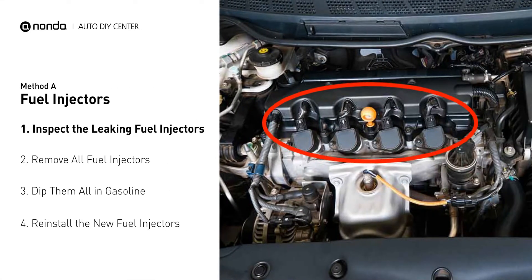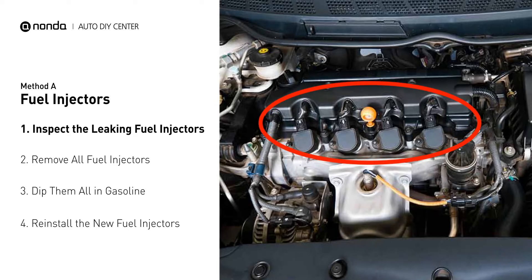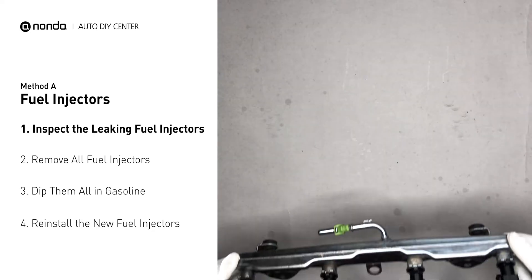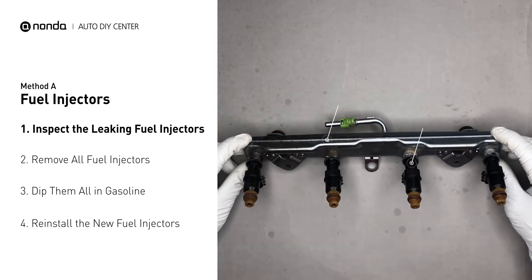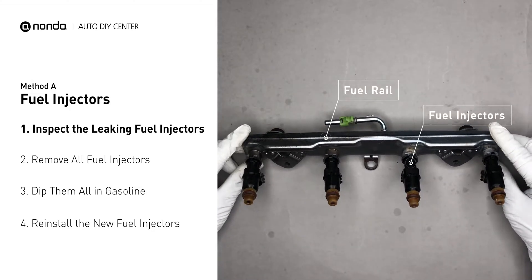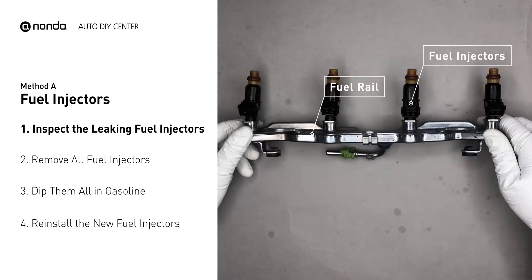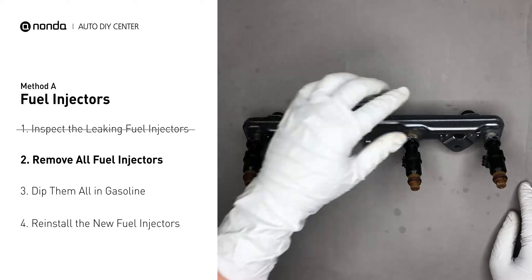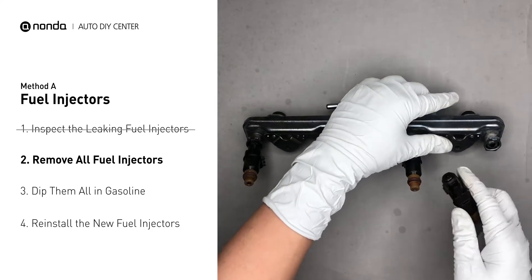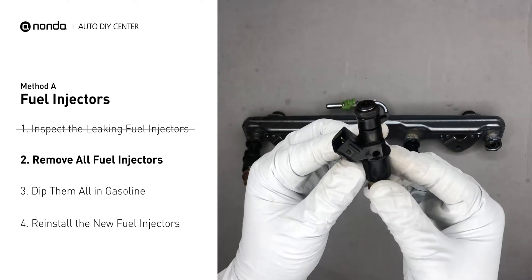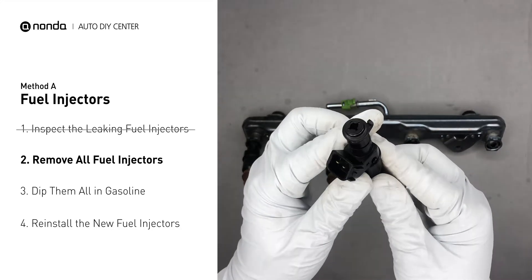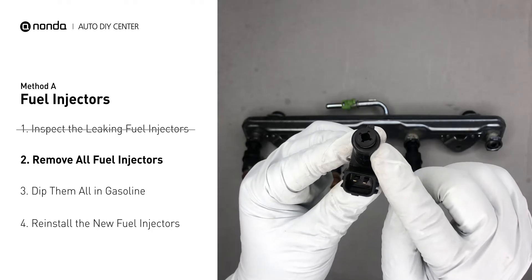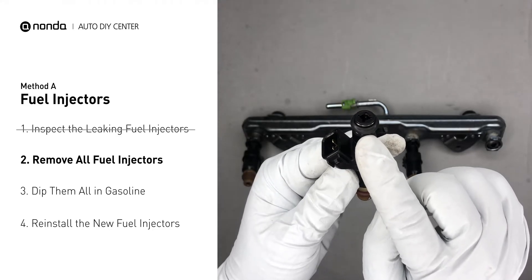The fuel injectors are mounted in the intake manifold so that they spray fuel directly at the intake valves. Inspect the leaking fuel injectors on the fuel rail. Carefully remove the fuel injector, making sure the new injector has new seals, and never reuse the old seals.